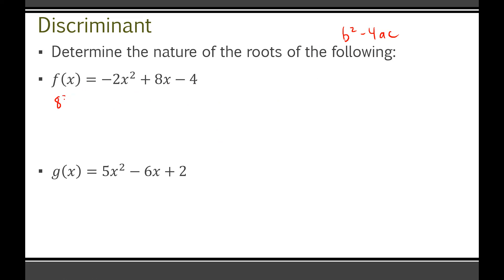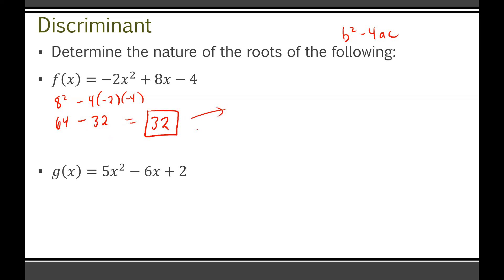In this first question, b² is 8 squared minus 4 times a, which is negative 2, times c, which is negative 4. You have to use your negatives — those aren't just there for show. Evaluating this: 8 squared is 64. Then 4 times negative 2 is negative 8, and negative 8 times negative 4 is positive 32, so minus positive 32. That gives us 64 minus 32 equals positive 32. That's our discriminant. Because it's a positive number, this is going to have two roots — even though the square root of 32 isn't a perfect square, it's still positive.